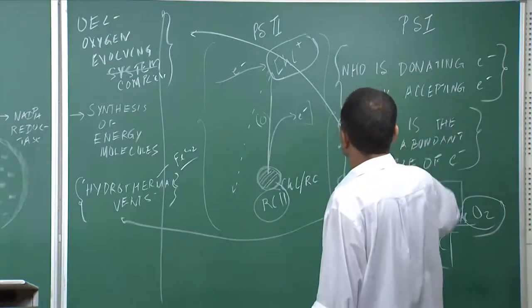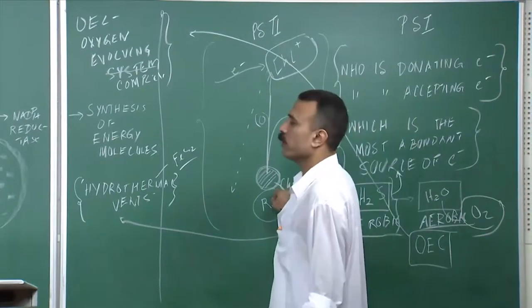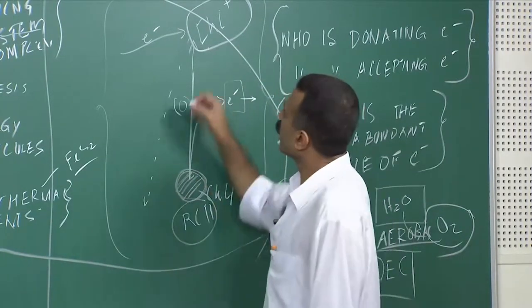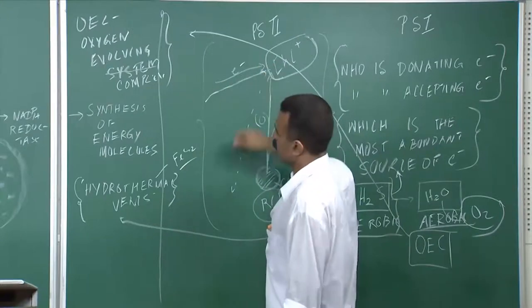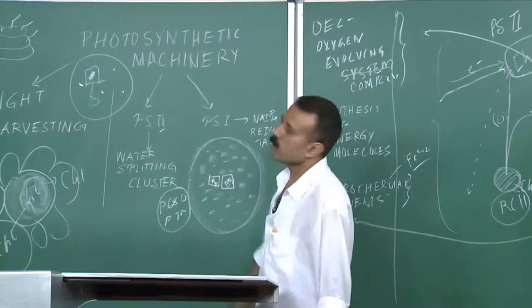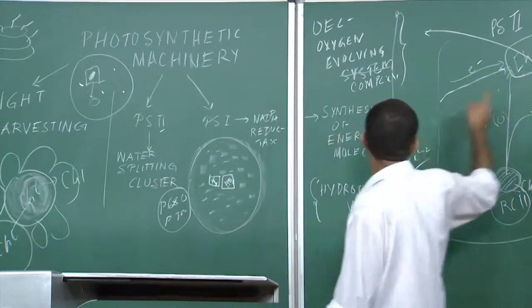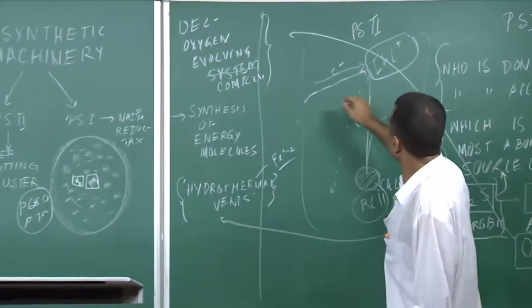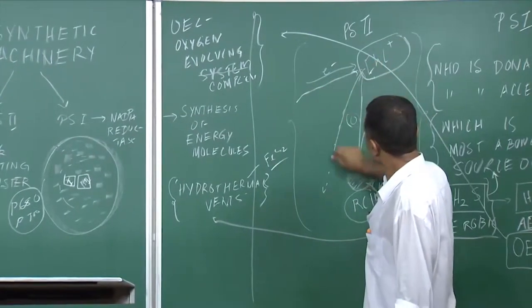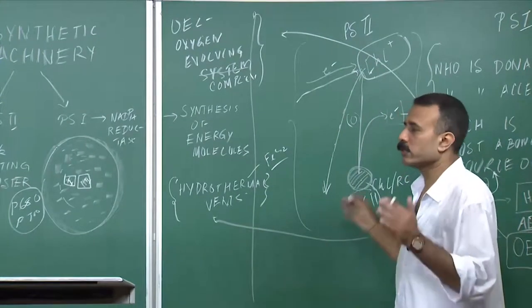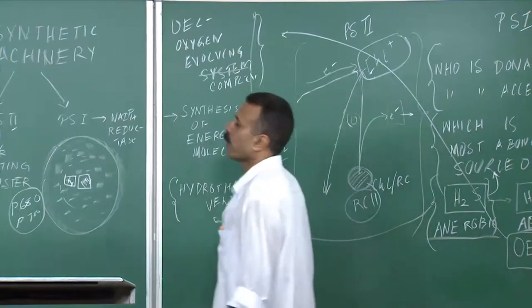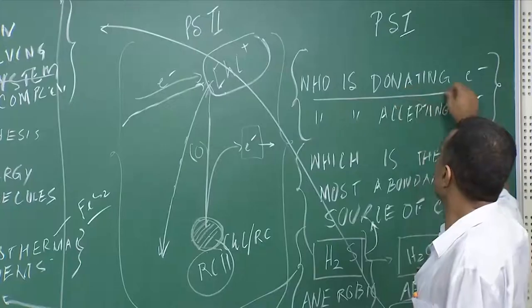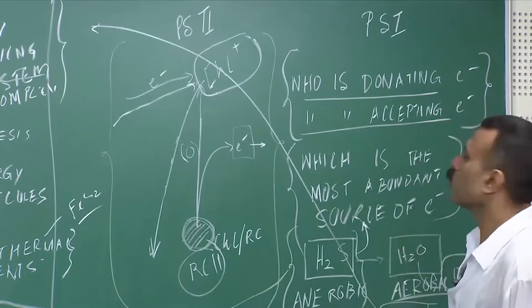Now, the question is: who is donating electrons here? Chlorophyll is donating electrons — there must be an acceptor. Who are the acceptors? We will talk about them now. Who is donating to this chlorophyll? You have to realize that in this pool you cannot keep on damaging yourself, because if you damage this, it is good enough of a free radical which could damage the rest of the system. So it has to be immediately brought back. Who is donating electrons to this so that it comes back to its ground state? This whole scheme has developed around that.